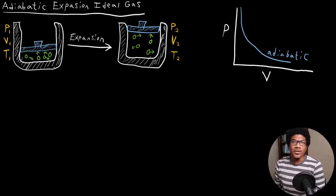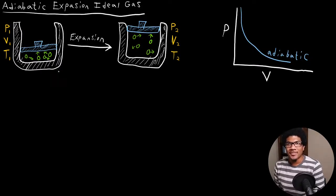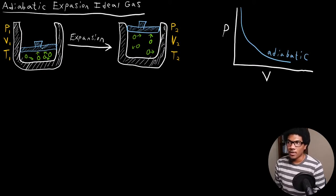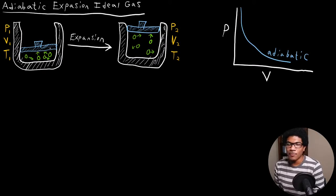In this video, we're going to look at the adiabatic expansion of an ideal gas. The type of process we're looking at is a gas that's initially compressed at some initial conditions P1, V1, and T1. This is our standard container with gas particles on the inside and a movable piston that we can use to change the volume.